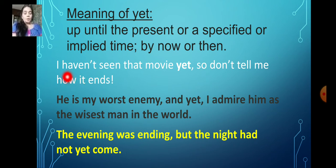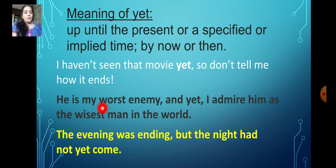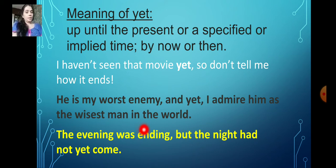Now the example sentences. I haven't seen that movie yet — somebody is asking: have you seen that movie? And you say: I haven't seen that movie yet, so don't tell me how it ends. Here: he is my worst enemy, and yet I admire him as the wisest man in the world — 'yet' means 'but still.' I admire him as the wisest man in the world.